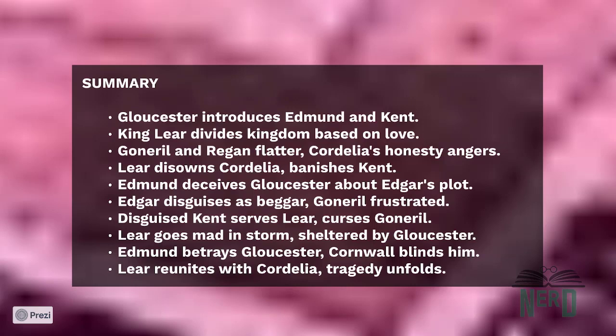Cordelia's suitor, the Duke of Burgundy, rejects her once she is dowerless. But the King of France values her honesty and takes her as his wife. Lear's kingdom is shared between Goneril and Regan and their husbands, the Dukes of Albany and Cornwall, respectively. Lear plans to alternate living with each of them.